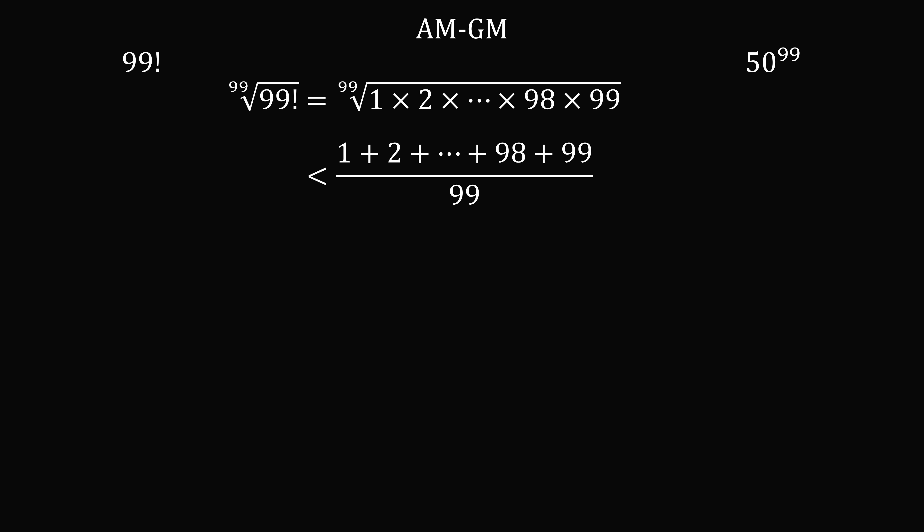So we need the sum of the numbers from 1 to 99. This will be 99 multiplied by 100 divided by 2. This is all over 99.